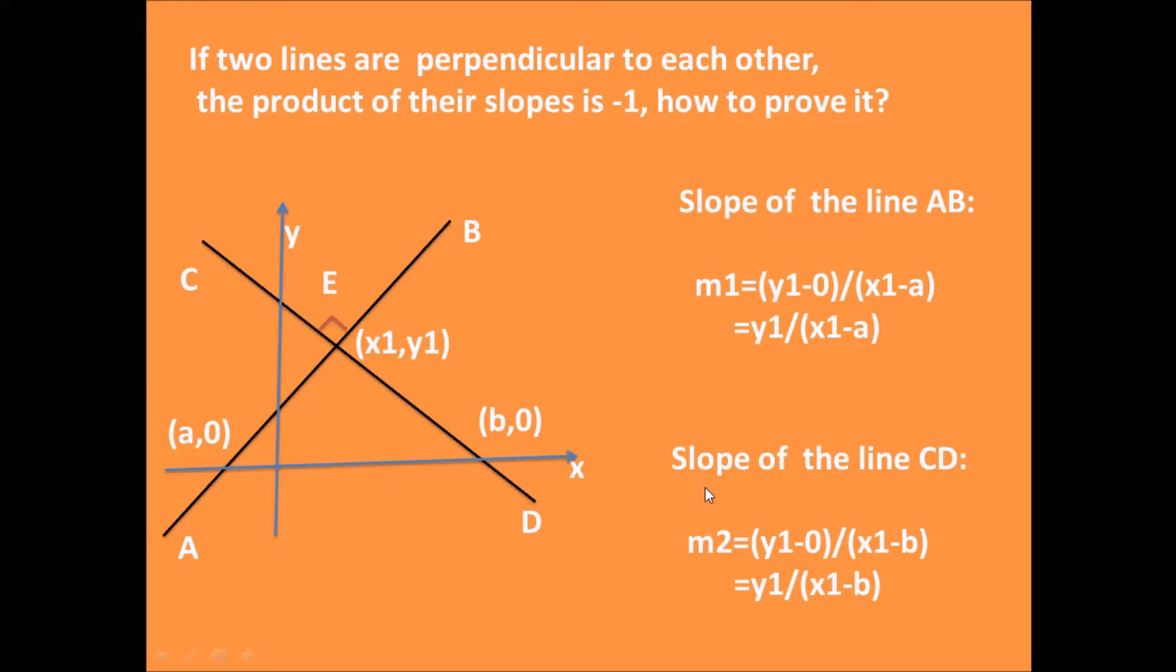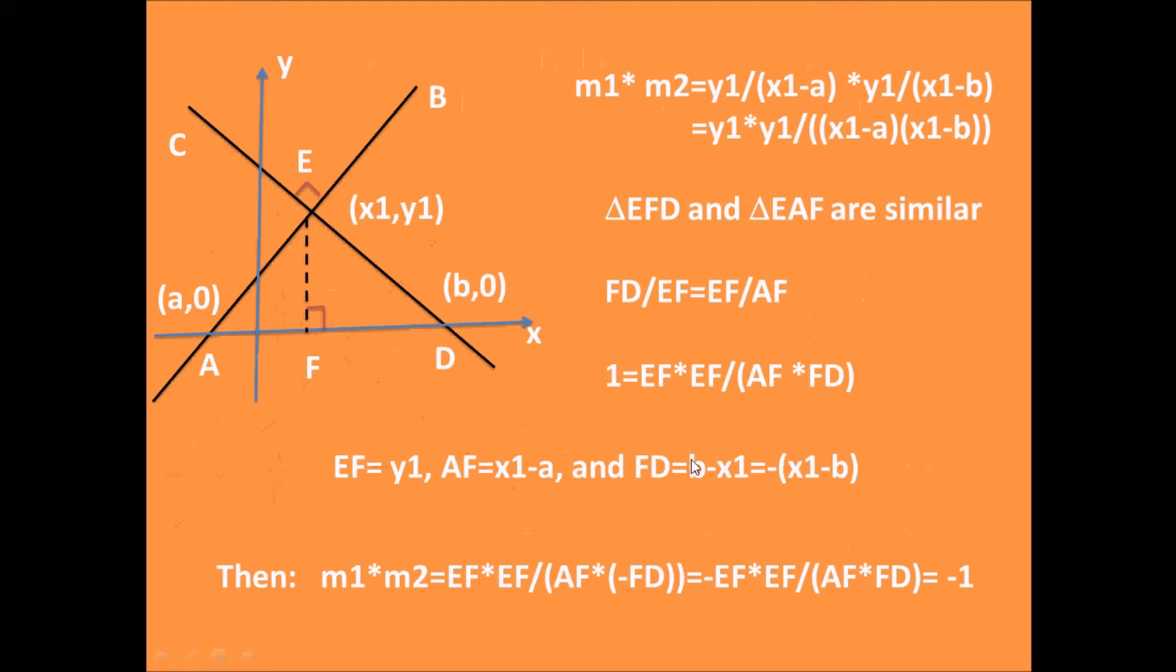Similarly, we can get the line slope for line CD: m2 = y1/(x1-b).